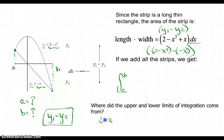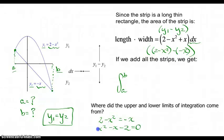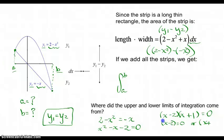We set the two functions equal to each other and find the x-values that make that true — hopefully a negative and a positive x-value. Adding x squared to both sides and subtracting two from both sides gives us a quadratic. Factoring: x times x gives x squared, and we need one minus and one plus. So either x minus 2 equals 0 or x plus 1 equals 0, giving x equals 2 or x equals negative 1. Now we know we integrate from negative 1 up to 2.